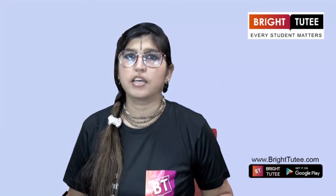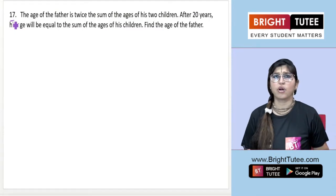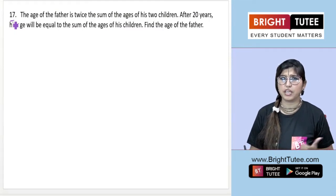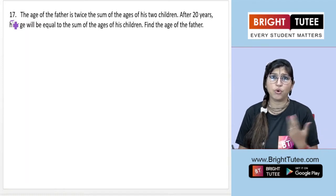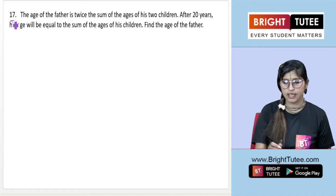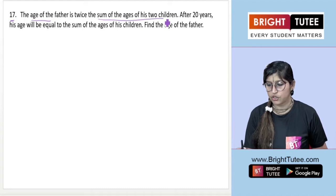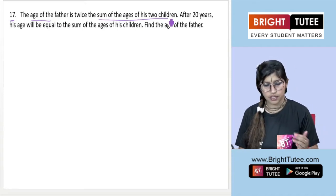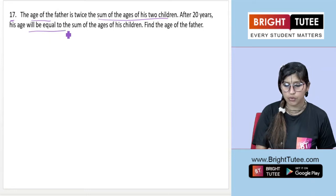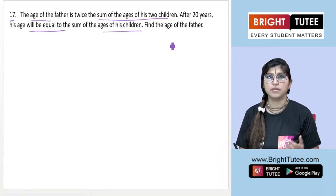Exercise 3.3, Class 10 Chapter 3 from NCERT Exemplar — we'll be going ahead with Exercise 3.3 Question 17. The question says: the age of the father is twice the sum of the ages of his two children. After 20 years, his age will be equal to the sum of the ages of his children. We need to find the age of the father.